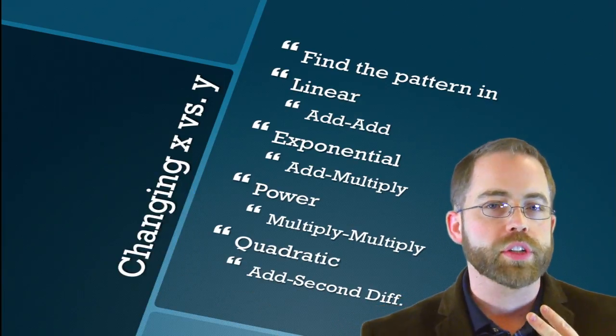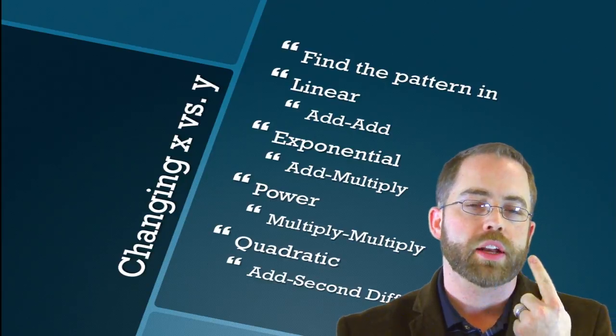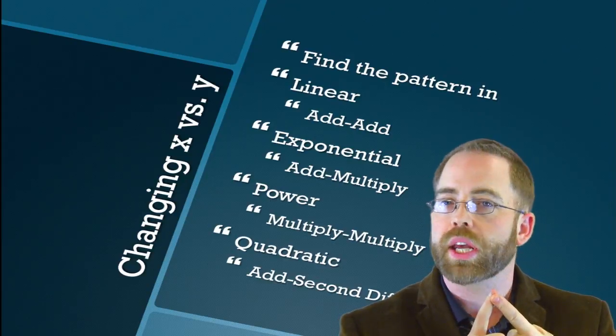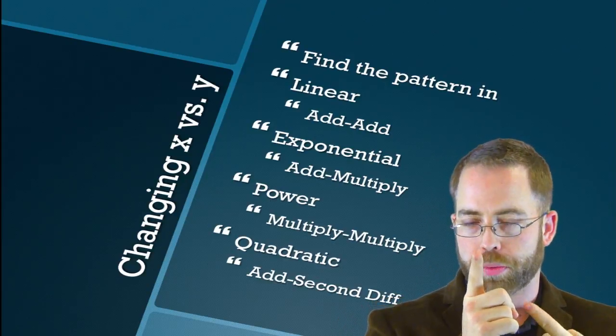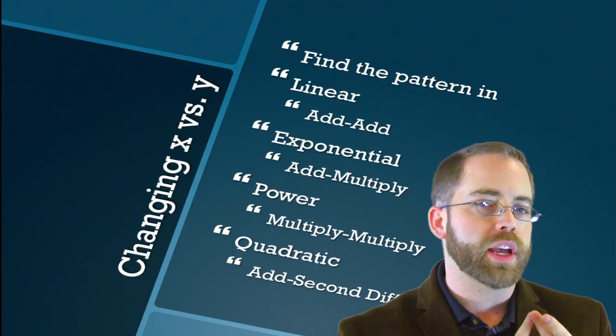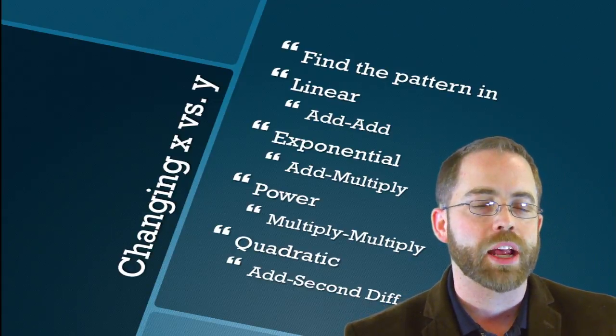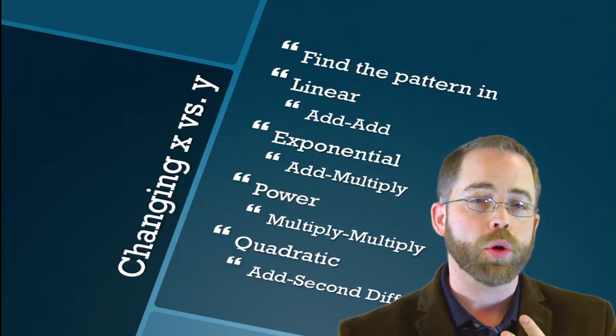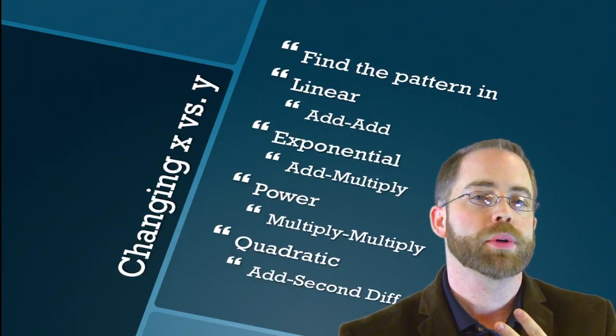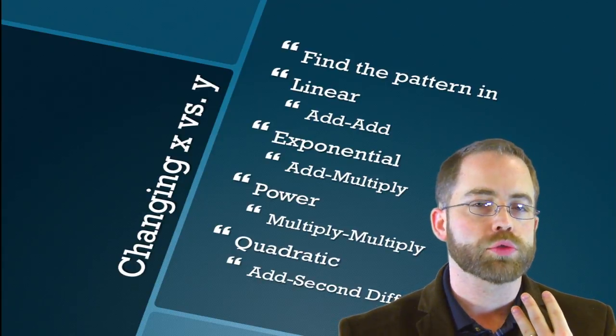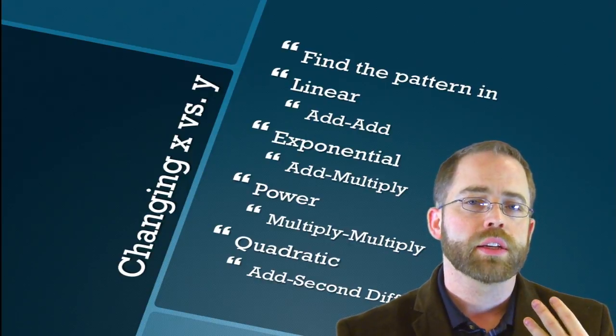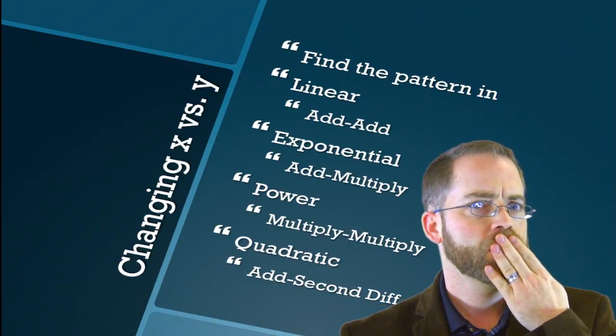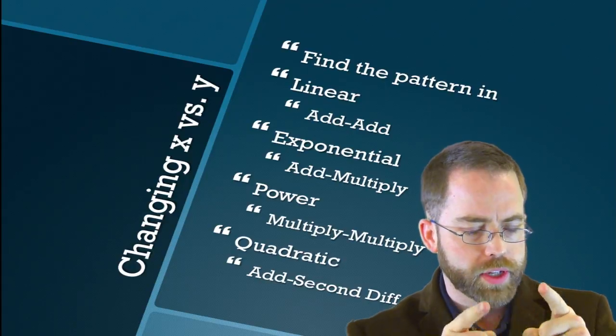We are going to have four different kinds of patterns that we're going to look at. There is linear, which is made out of add-add. I'll explain what that means in just a second. There is exponential, which is made out of add-multiply. There is power, which is made out of multiply-multiply. And there is quadratic, which is made out of add-second-diff. What is that? Let's find out.